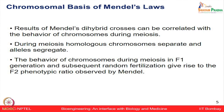During meiosis these homologous chromosomes get segregated and therefore alleles also get segregated. The behavior of chromosomes in the meiosis process of the F1 generation as well as after fertilization in the F2 generation could be observed by what Mendel has already shown in his crosses.